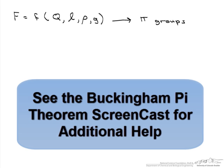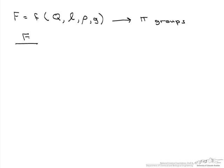We use the Buckingham pi theorem and find that our two pi groups are: F divided by rho·g·L³, which is a function of Q divided by the square root of g times L to the fifth.